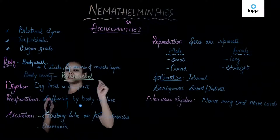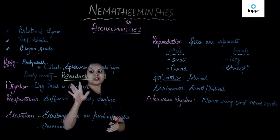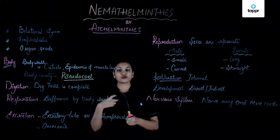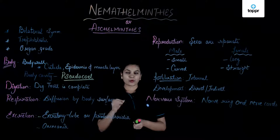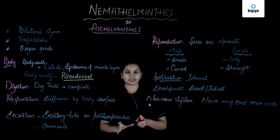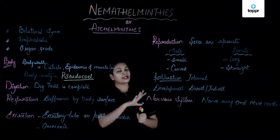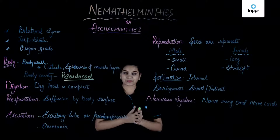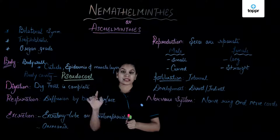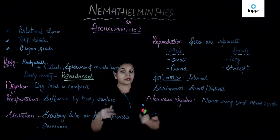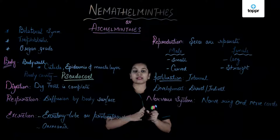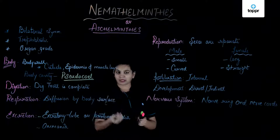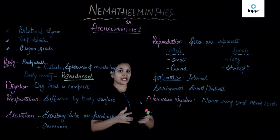One distinguishing feature of Nemathelminths is their body cavity, called the pseudocoelom. Till Platyhelminthes, organisms were acoelomate; here the organisms are pseudocoelomate. Pseudo means false and coelomate means body cavity. Although it appears there is a body cavity, it is a false body cavity as it is not lined by mesodermal cells. These organisms are triploblastic with ecto, meso, and endoderm. For a true coelom, the cavity must be lined by the mesodermal layer, but that is not the case in Nemathelminths — hence it is called a pseudocoelom.